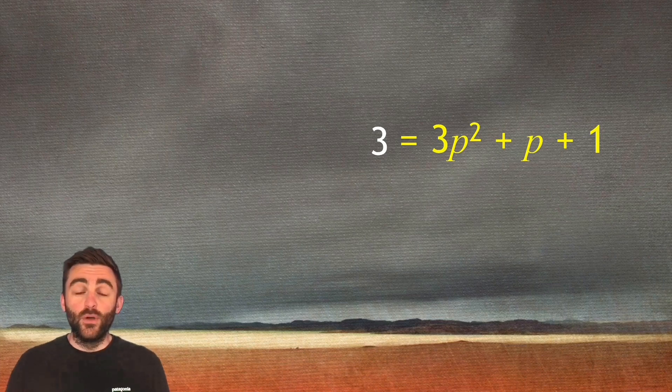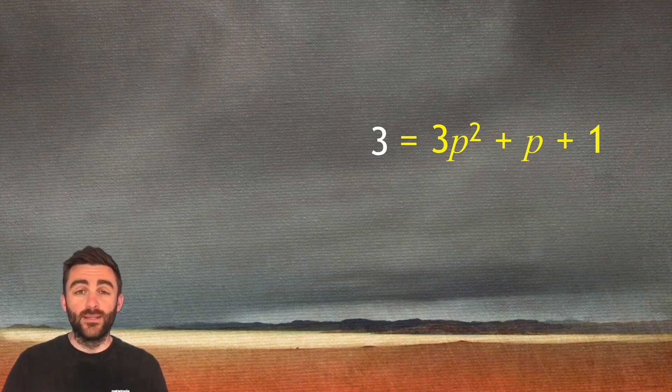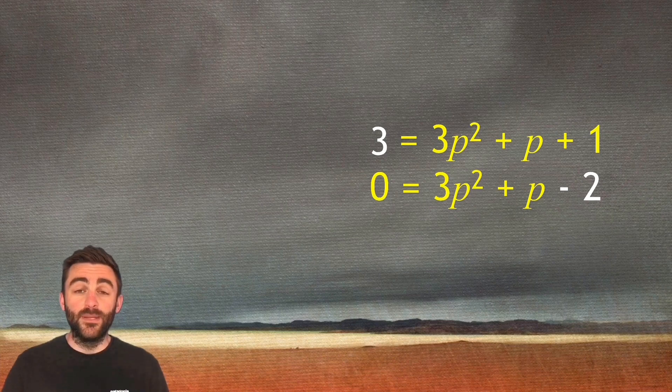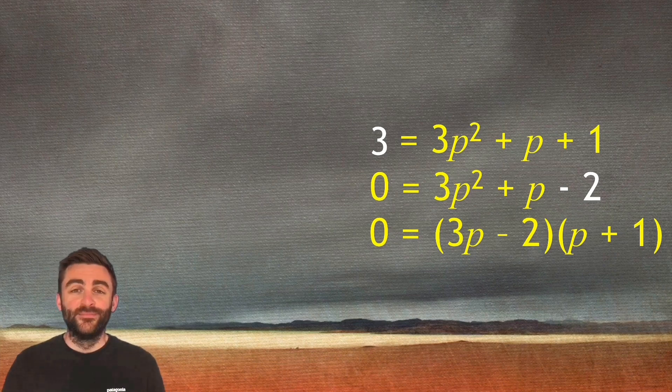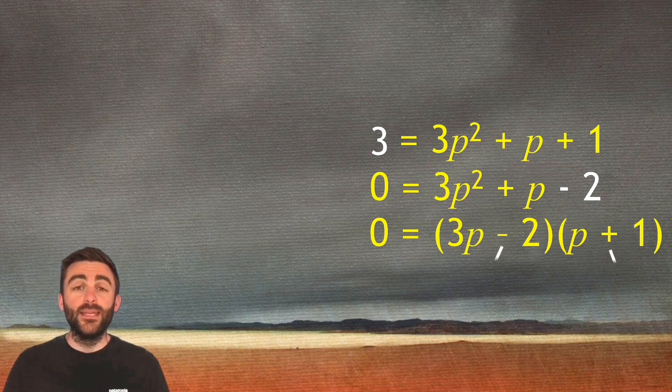When we solve a quadratic equation we always want to make it equal to zero first of all. So that three on the left hand side can move over to the right and subtract. Leave the zero behind. Three p squared add p minus two is what we'll get. Because one take away three gives us minus two. So now all we have to do is factorize. So we get three p minus two and p add one. And you can pause the video for a second to convince yourself that that is the case. And that leads us to two solutions. p equals two thirds and p equals negative one.